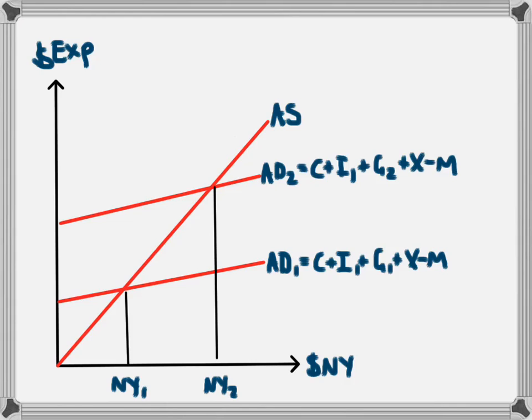Basically what is happening here is that the government have used their fiscal policy, which is their budget, to increase government spending from G1 to G2. The increase in government spending has led to an increase in aggregate demand from AD1 to AD2, and this has led to the aggregate demand line shifting upwards. As a result, we have a new level of national income. We've moved from NY1 to NY2.